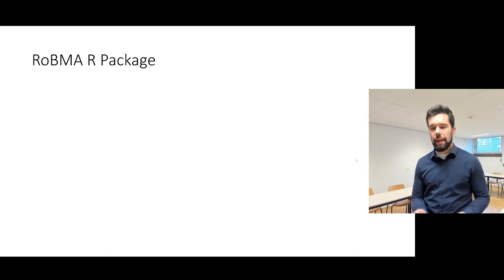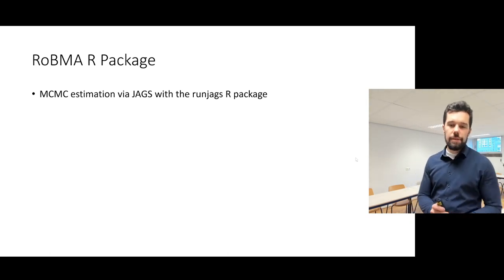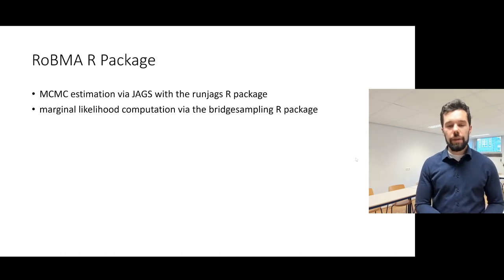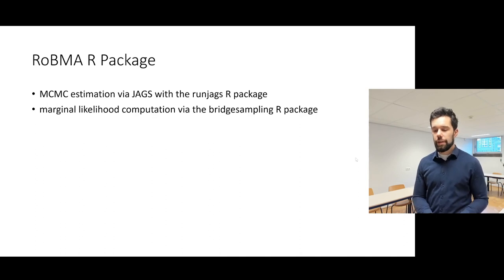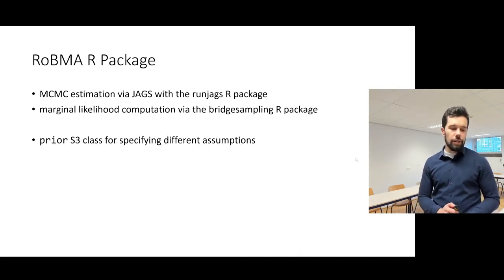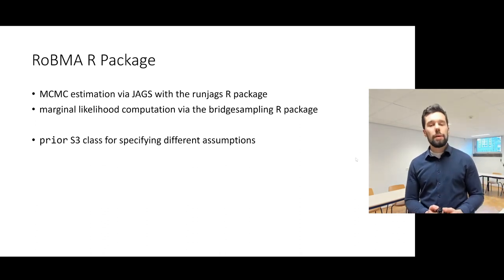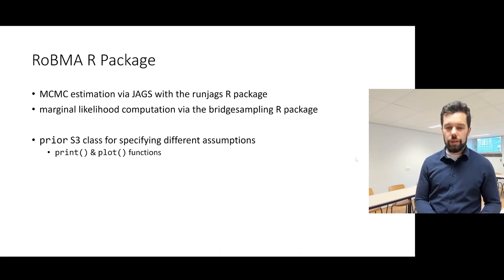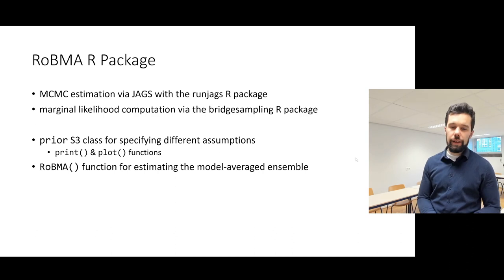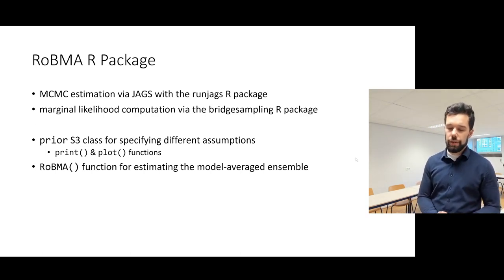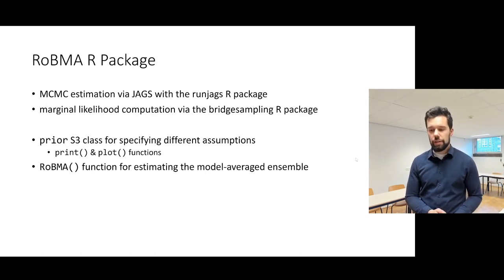Now I will move from the methodology background to the package itself. The package uses MCMC estimation with JAGS, running the runjags package in the background to estimate model parameters. We then use marginal likelihood computation, implemented via the bridgesampling R package, to compute marginal likelihoods and update model probabilities. The two main features of the package are the prior function, which creates a class allowing us to specify different assumptions via prior distributions, and the robma fitting function, which fits the specified model ensemble and performs model averaging automatically.